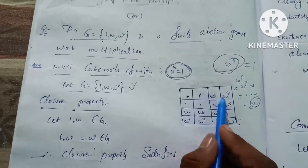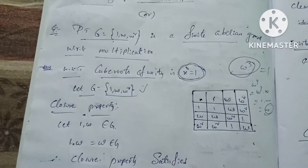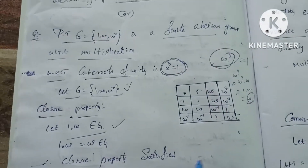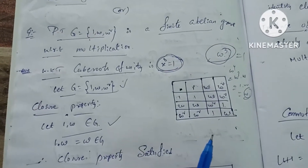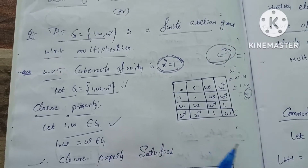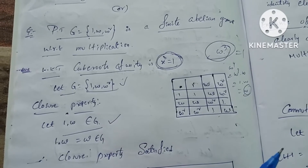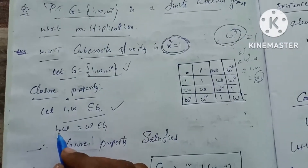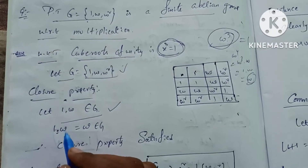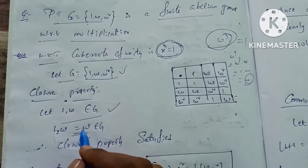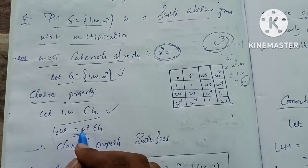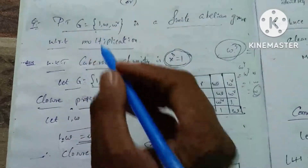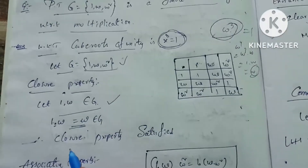First, we check the closure property. From the composition table, every result of the binary operation is an element within G. For example, 1 into omega equals omega, and omega belongs to G. Therefore, closure property is satisfied.